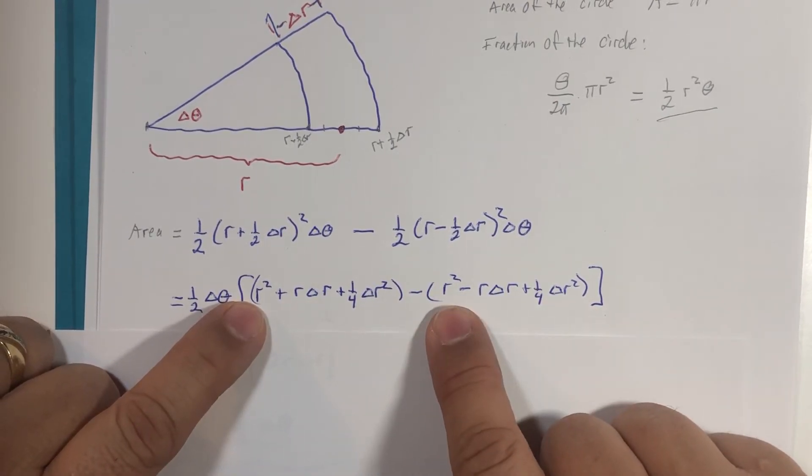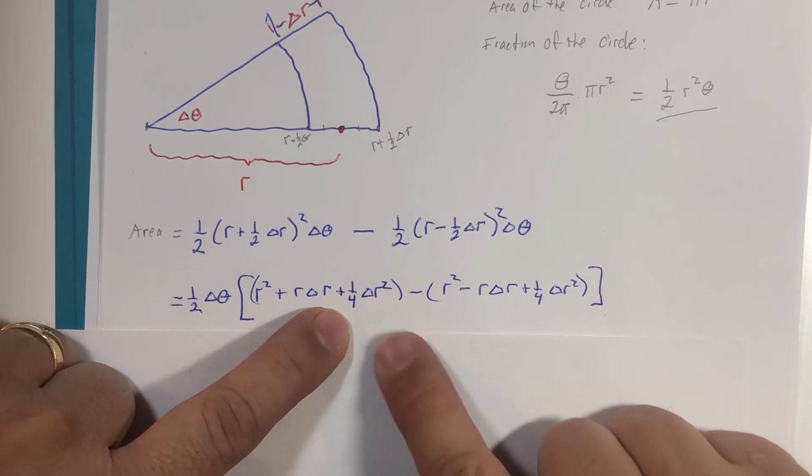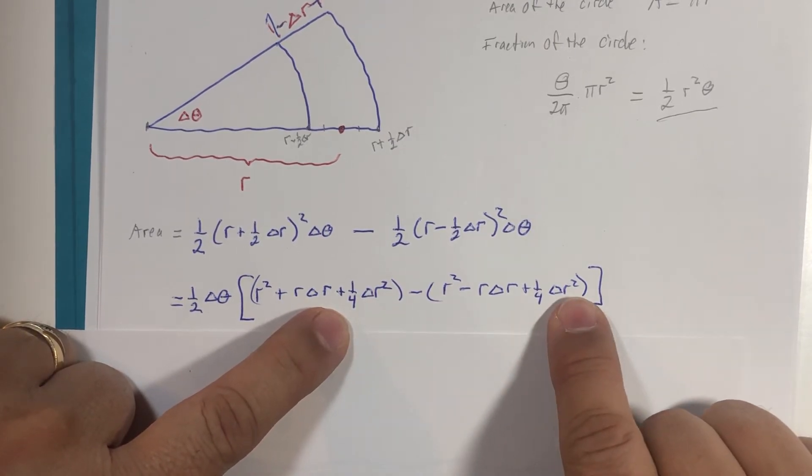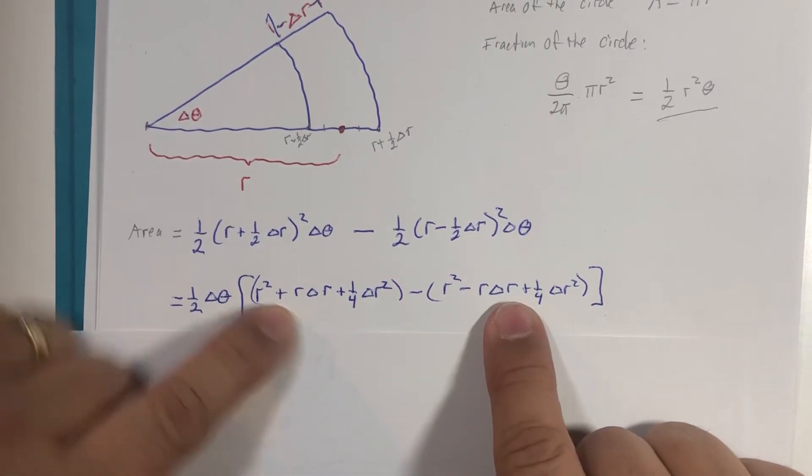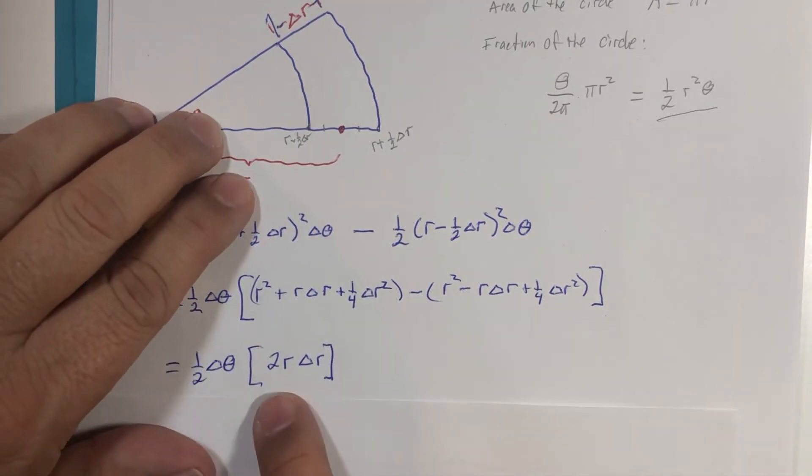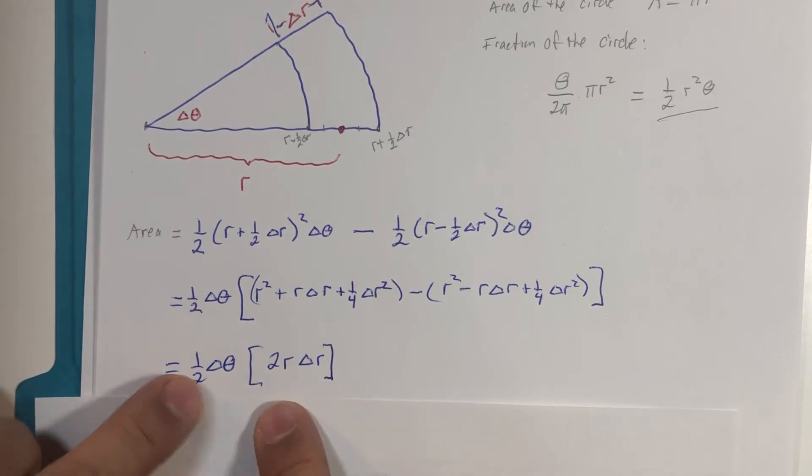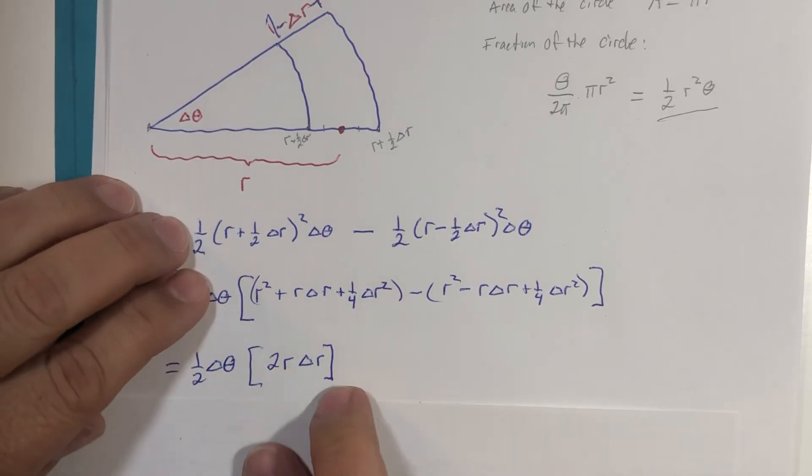r² minus r² is 0, ¼ of Δr² minus ¼ of Δr² is 0, r Δr minus a negative r Δr is 2 times r Δr, half of 2 is 1, and we get to this expression: r Δr Δθ.